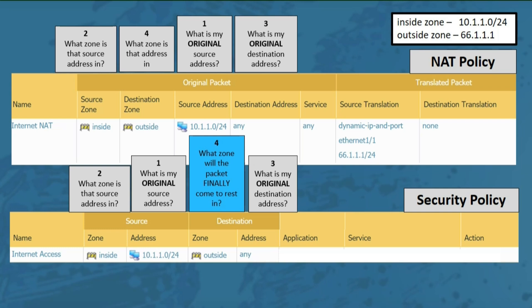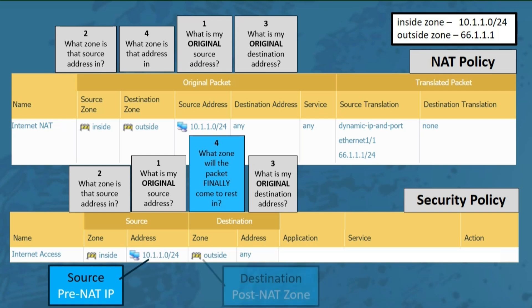Keep in mind that when dealing with the security policy, the source zone and both the source and destination addresses refer to pre-NAT IP information. Only the destination zone refers to post-NAT information. That's why Palo Alto Networks uses the phrase 'pre-NAT IP, post-NAT zone.' The source IP in the security policy is the address before the NAT process, and the destination zone is where the packet comes to rest after going through NAT. Finally, we specify the application and set the action to allow.